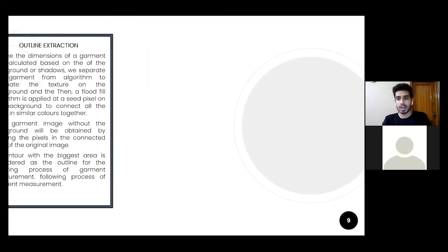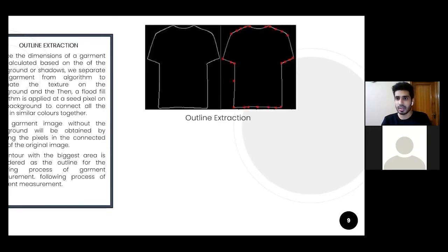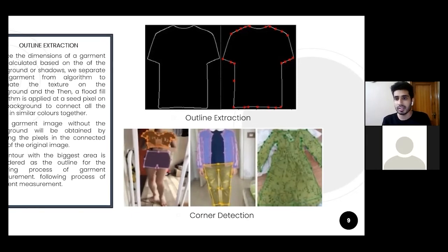Now coming to outline extraction. Whenever we have to measure a garment, first we have to extract the outline. But before that, since every image has a different background, we need to remove the texture from the background. Using the floodfill algorithm, we have to ensure that the entire image is of a single color to reduce any sorts of error due to the background.